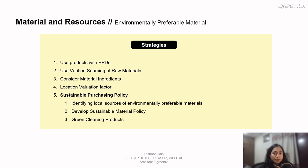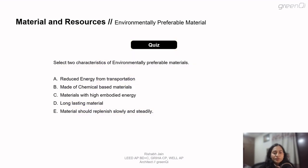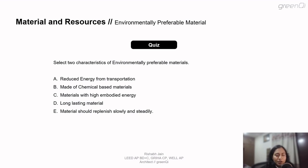Now that we've discussed the materials part of this category, we'll move to the waste section. But first, let's take a question. Select two characteristics of environmentally preferable materials: Option A — reduced energy from transportation; Option B — made of chemical-based materials; Option C — materials with high embodied energy; Option D — long lasting material; Option E — material should replenish slowly and steadily. The right answer is Option A, reduced energy from transportation, and Option D, long lasting material. Materials should have low energy from transportation and should be long lasting so we don't have to keep replacing them.